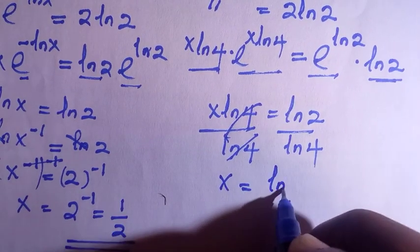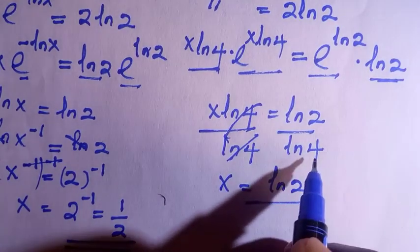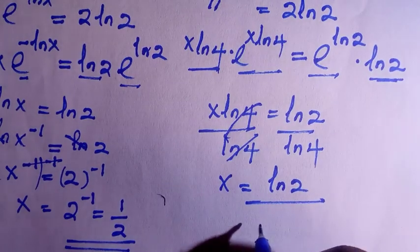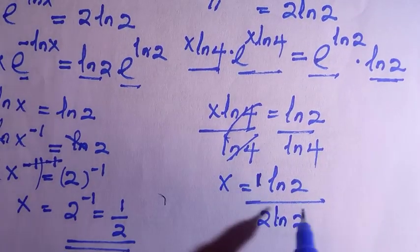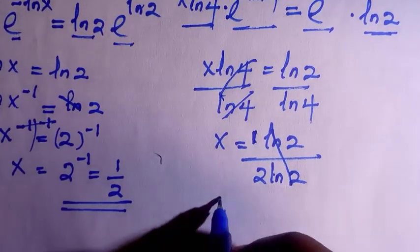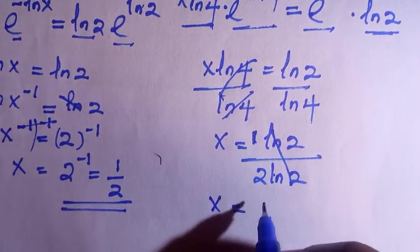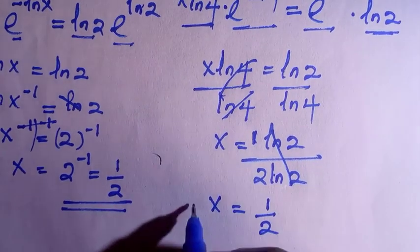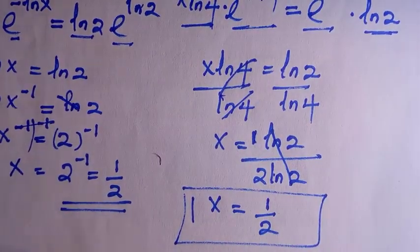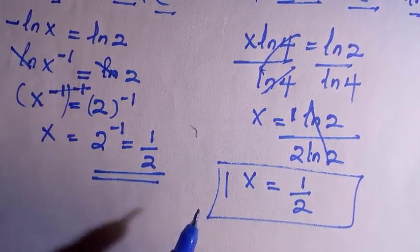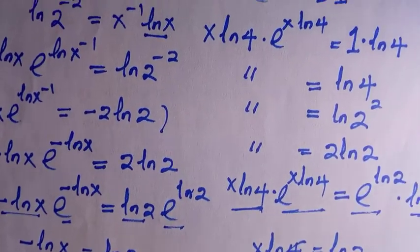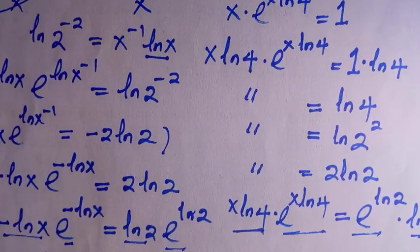So x equals ln 2 divided by ln 4. But ln 4 can be written as 2·ln 2. Writing 4 in index form and applying the law of logarithms, we get x equals 1 divided by 2 — the same answer as before. This problem is now solved. Thanks for watching. Don't forget to subscribe and turn on the notification bell. Never stop learning.